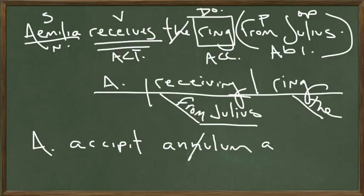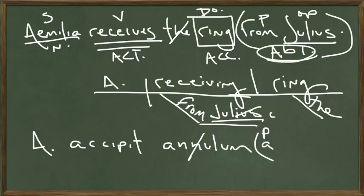So here's where the trouble begins. Julius here is in the nominative case. It's in the nominative case here. But because of this preposition, A, the next word is going into the ablative case, as we already established here. So we're going to change the U-S to O. Amelia accipit anilum. A. Julio.